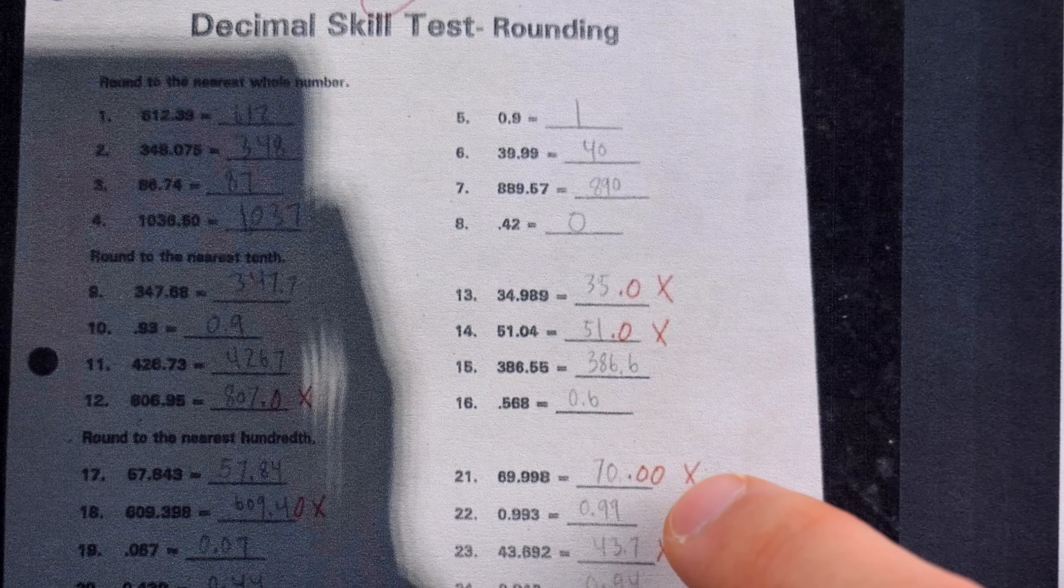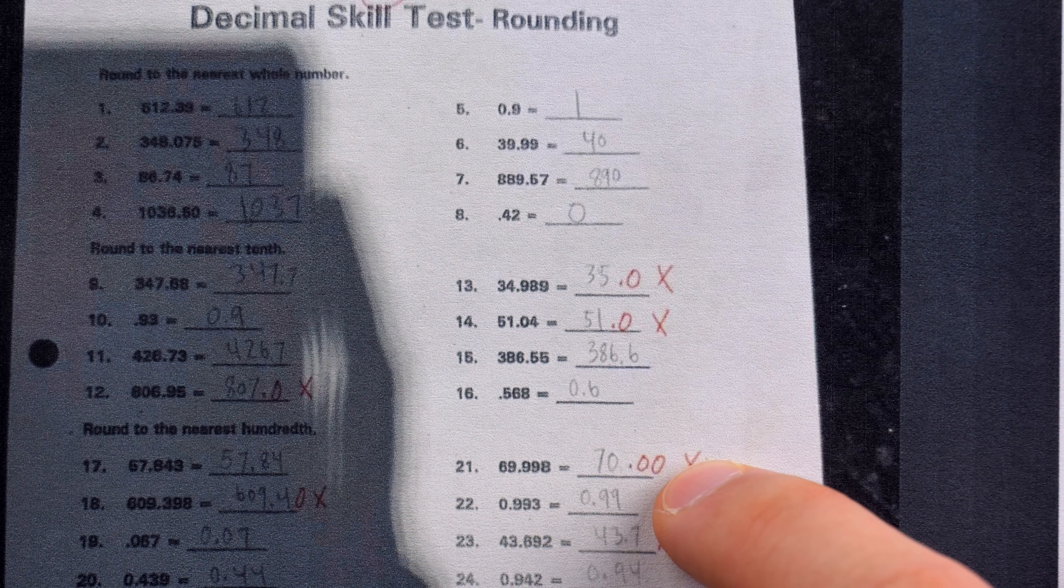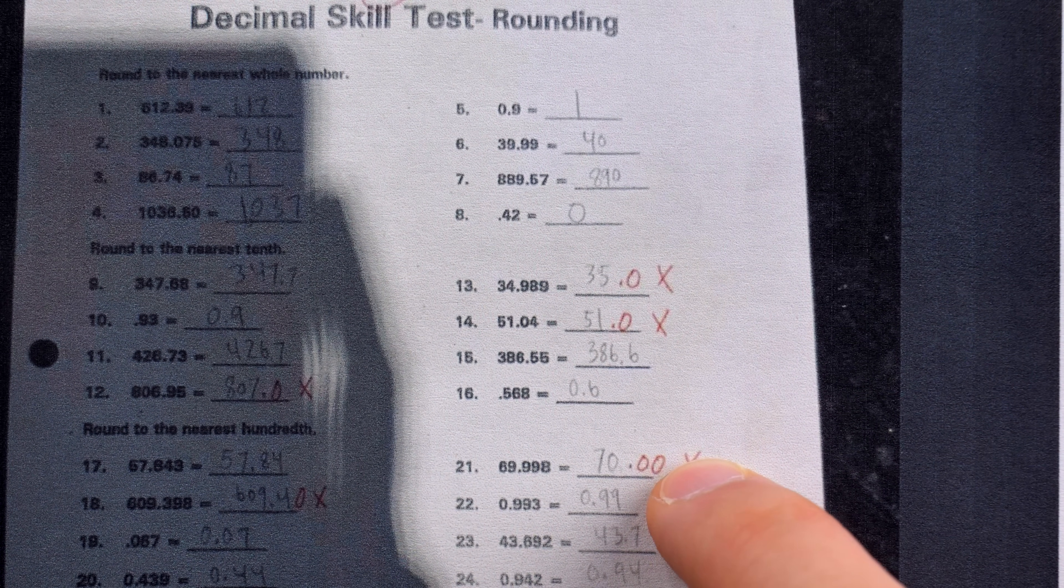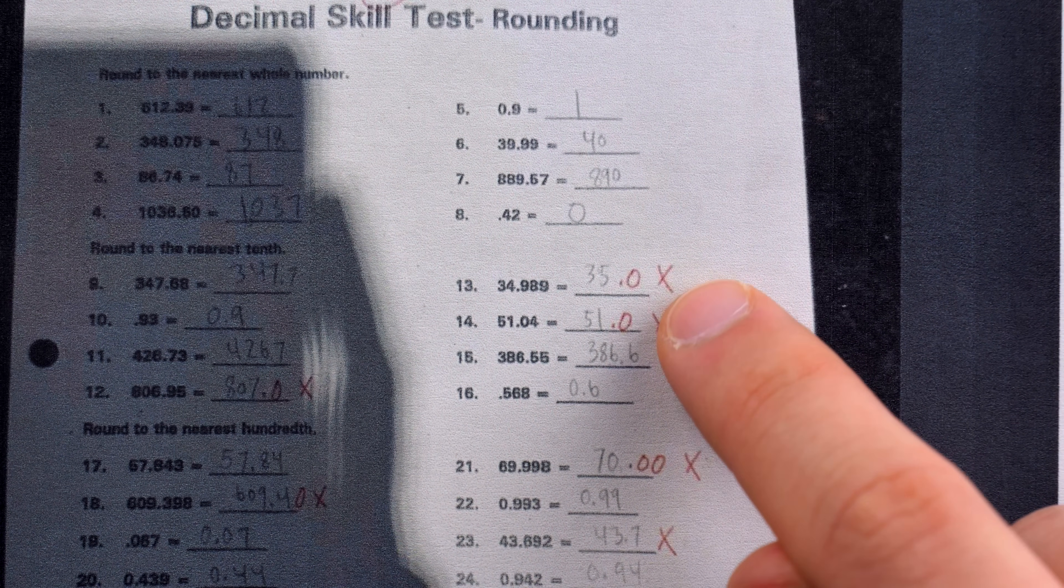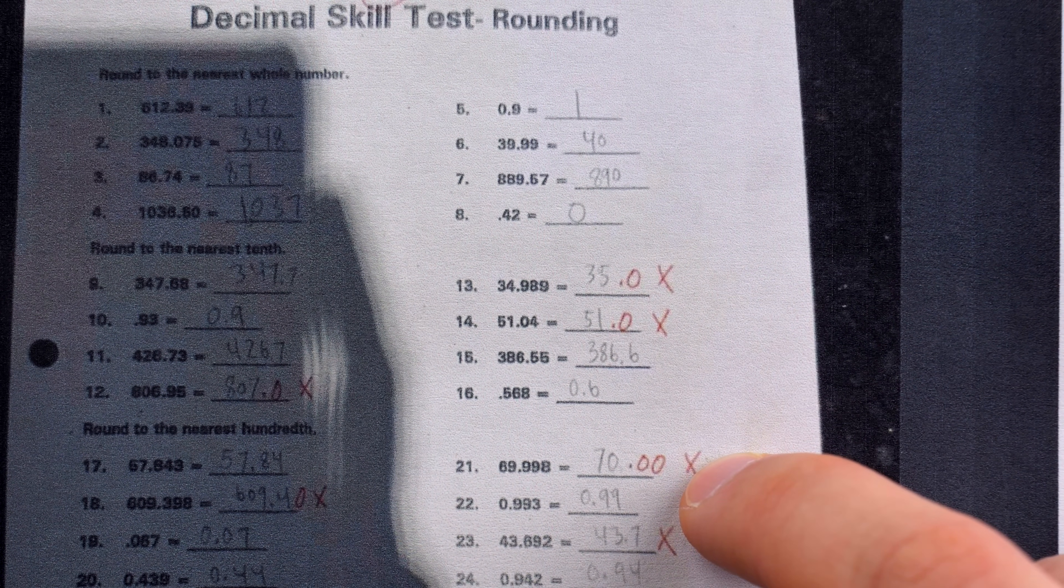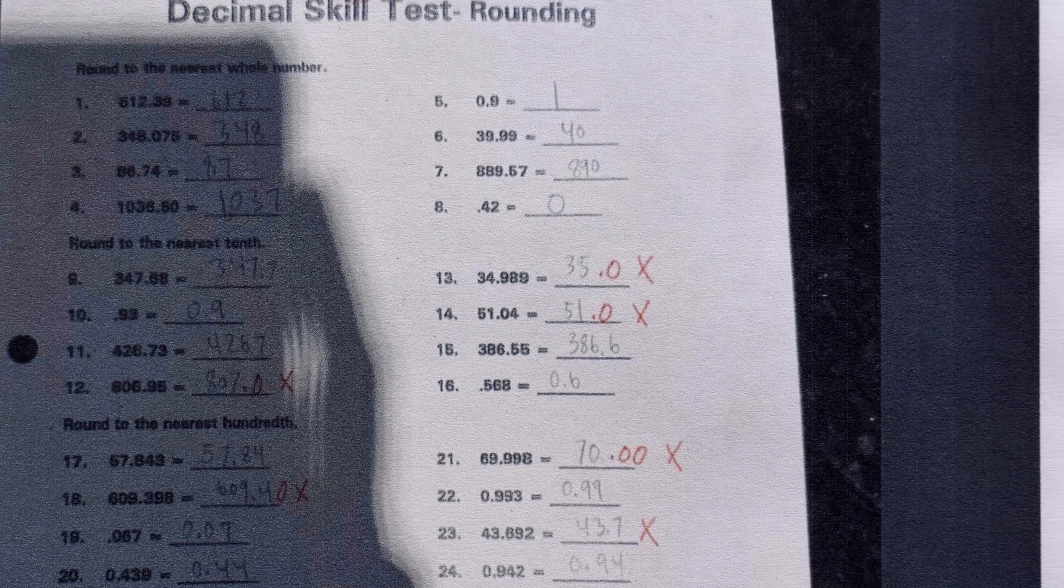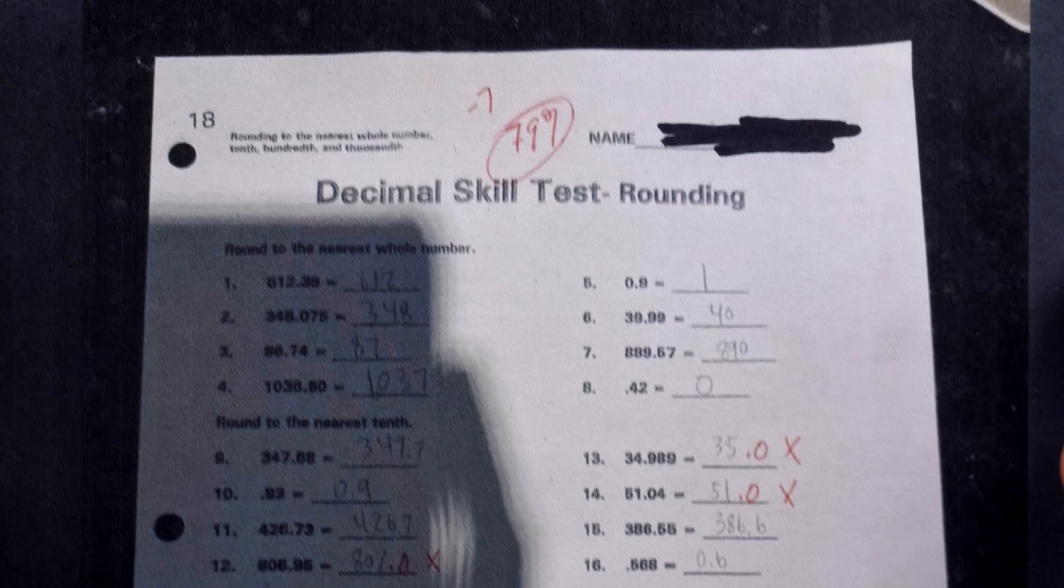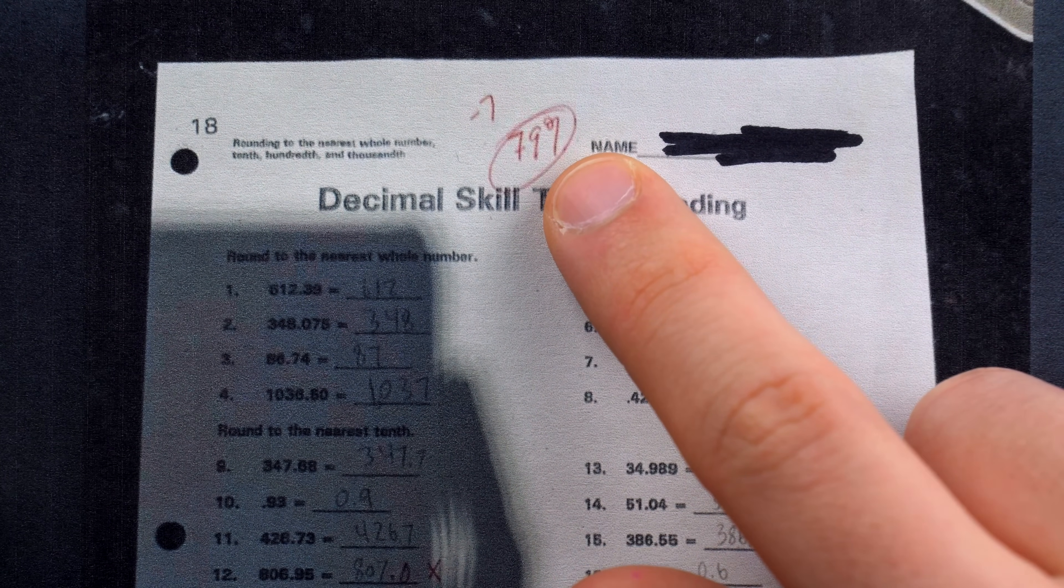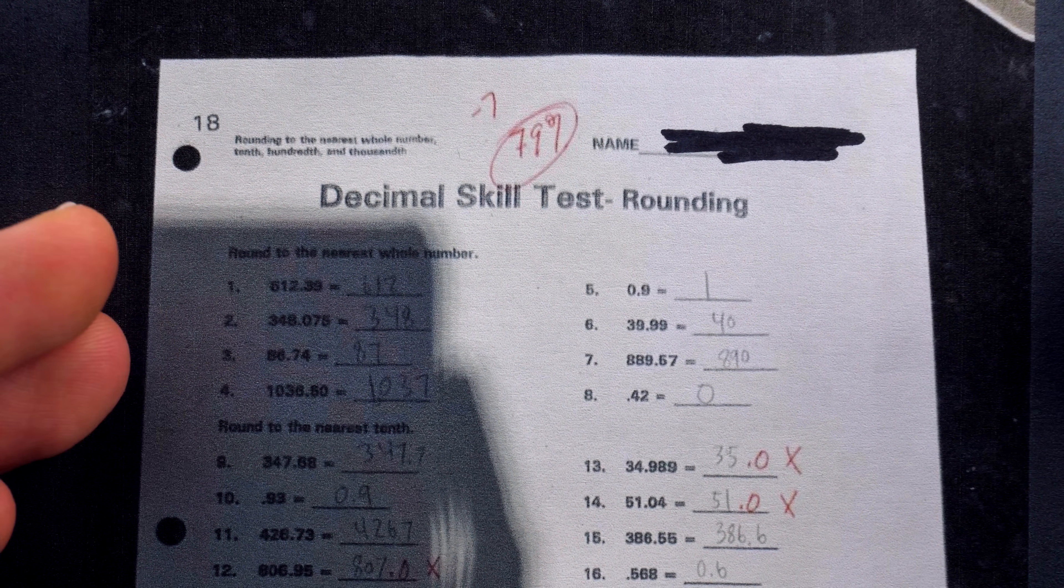And so I don't need to write 35.0 because the zero doesn't add anything. Same thing here, zero doesn't do anything. Two zeros, that doesn't do anything. So why write that when I could just write 70. Of course, the teacher is insisting that he puts these trailing zeros for his answer to be correct. And if you didn't see the grade already, he was penalized pretty harshly for this mistake, earning a 79%, which is a C plus generally on this test.